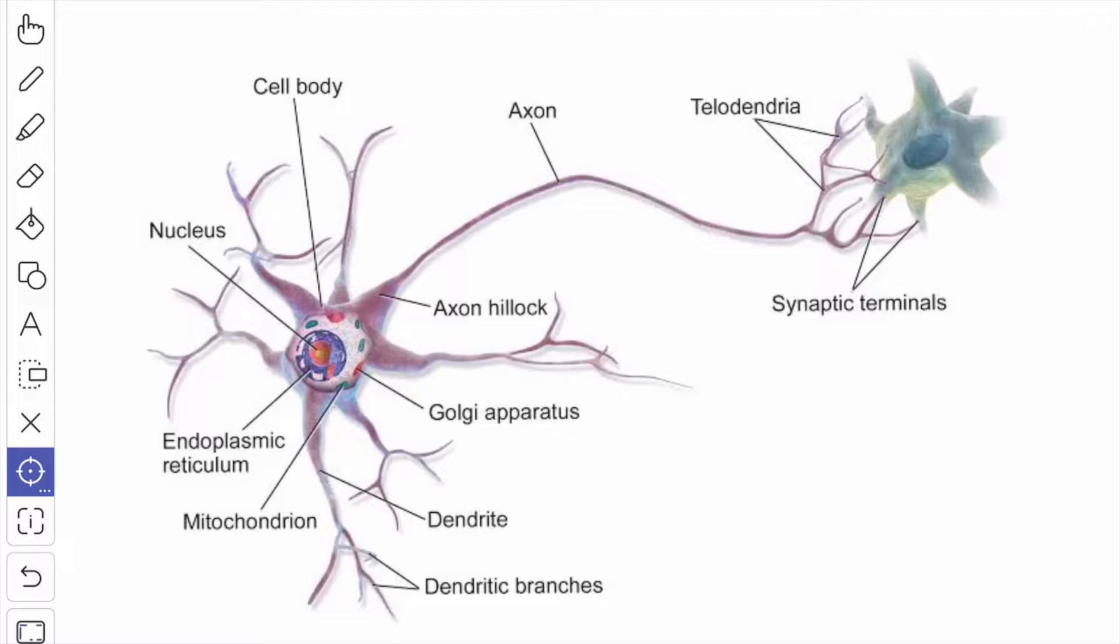These processes or cytoplasmic extensions, first we will see about the cell body or soma. It contains a nucleus and a surrounding cytoplasm or perikaryon, and it is limited outside by the plasma membrane.